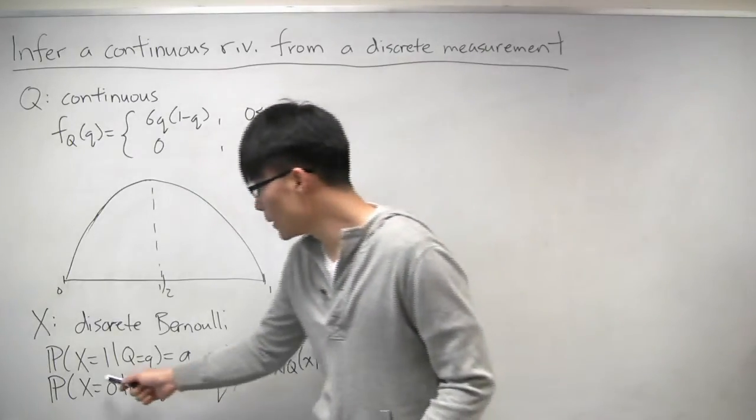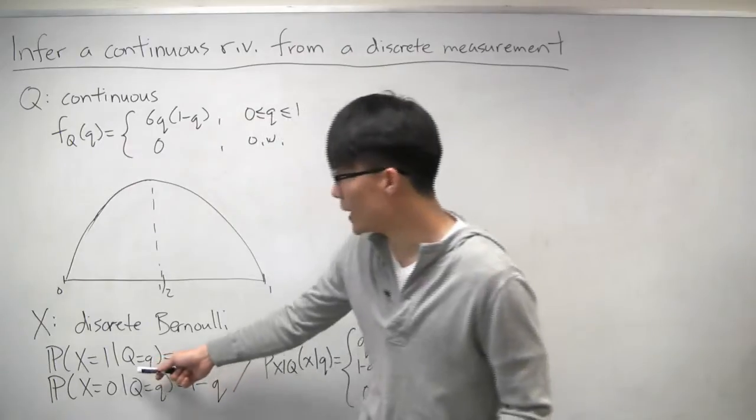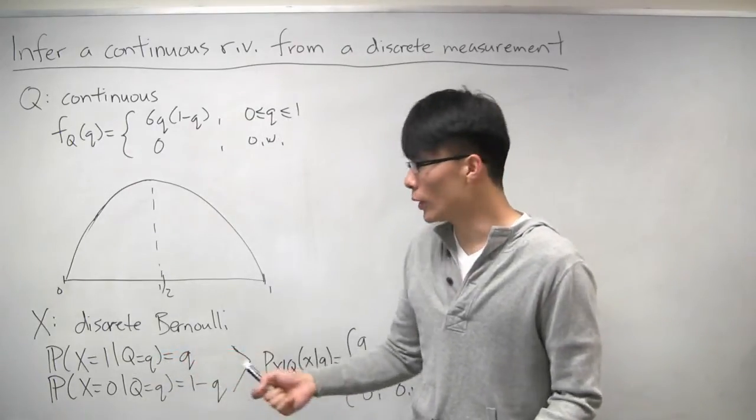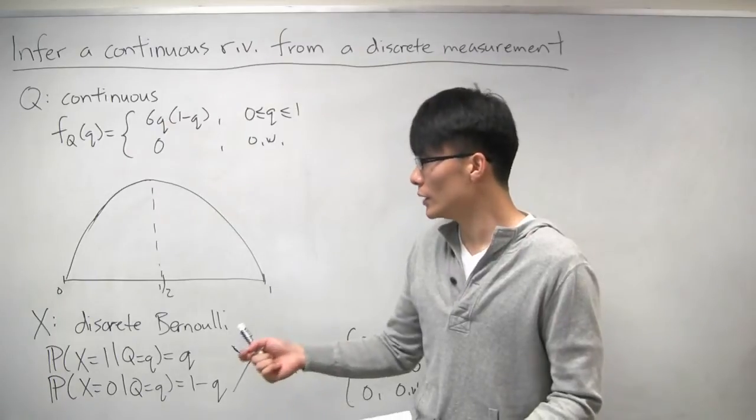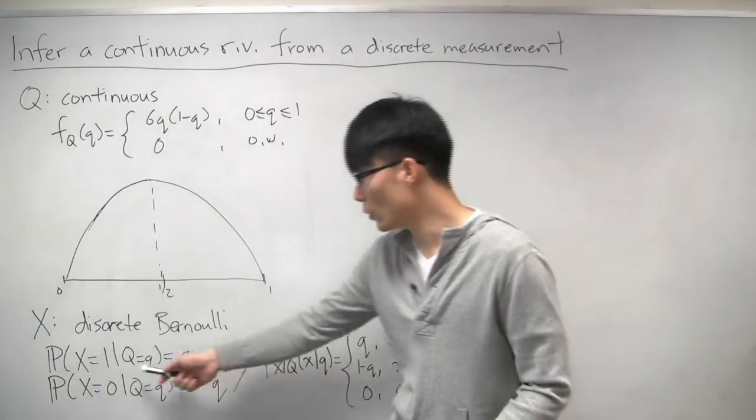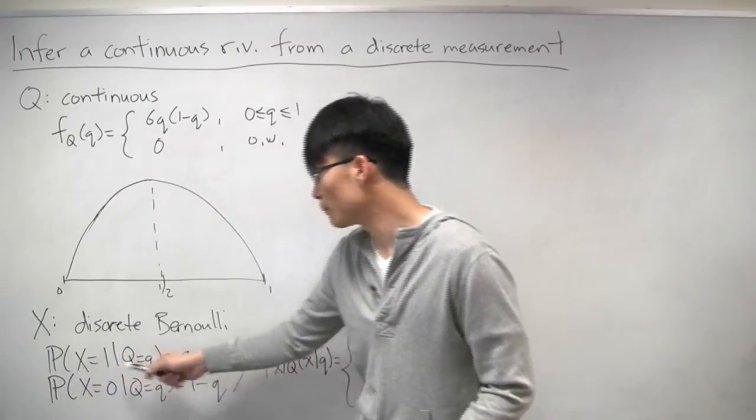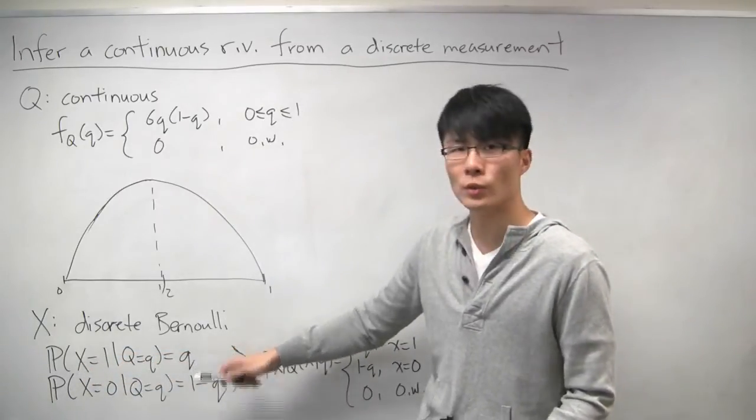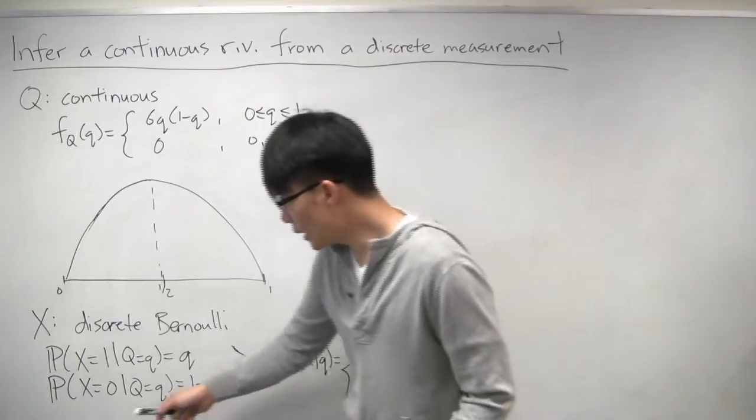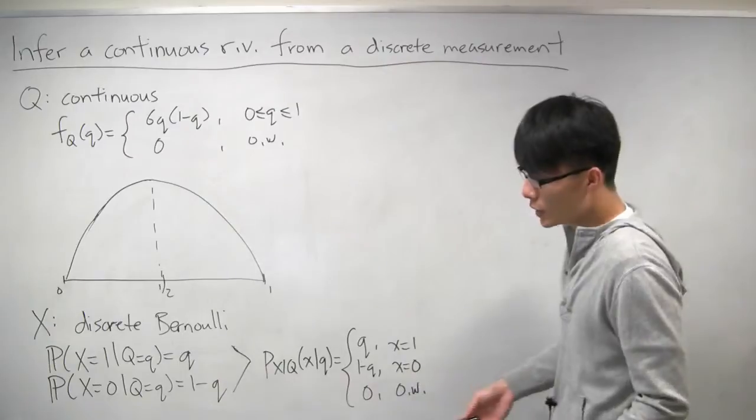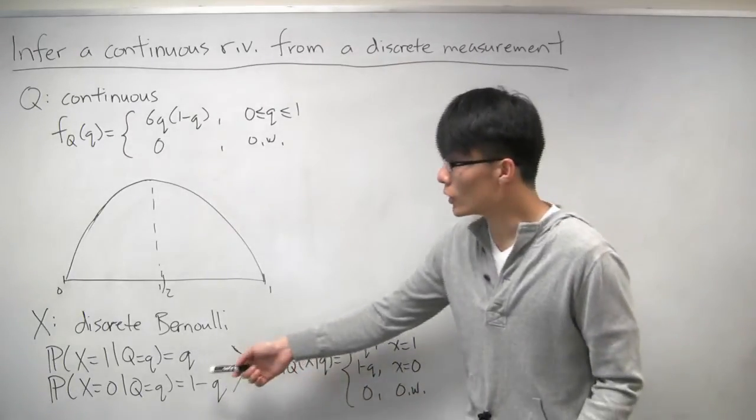The model that we have is that if we knew what this bias q was, if we knew that it was a little q, then this coin behaves as if it was a coin with that bias. So the probability of getting heads, or the probability that x equals 1, is just equal to q, which is the bias. And the probability that it's equal to 0 is 1 minus q.